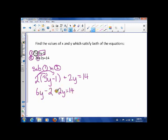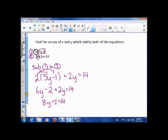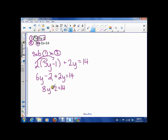Now I collect like terms. 6y and 2y is 8y minus 2 is 14. And now I move that 2 over. So 8y is equal to 14 plus 2, which is 16. So now I divide both sides by 8.